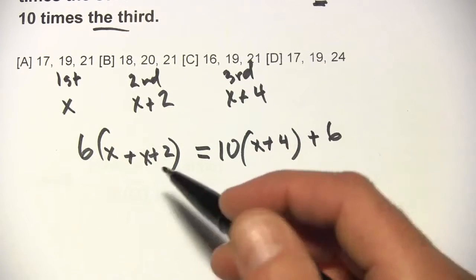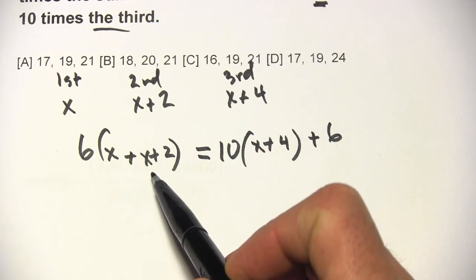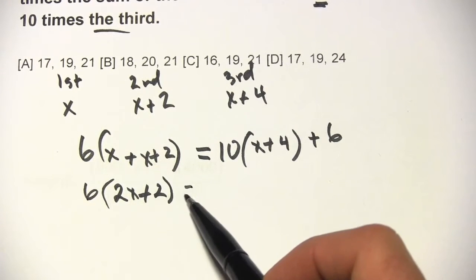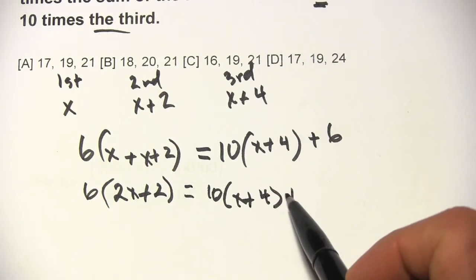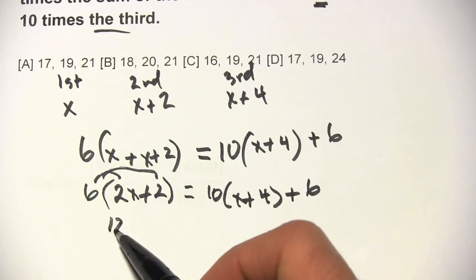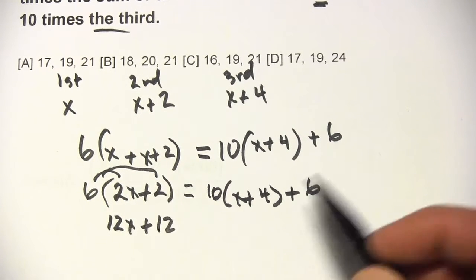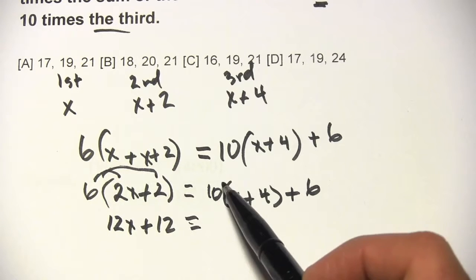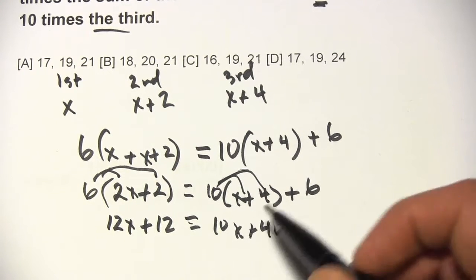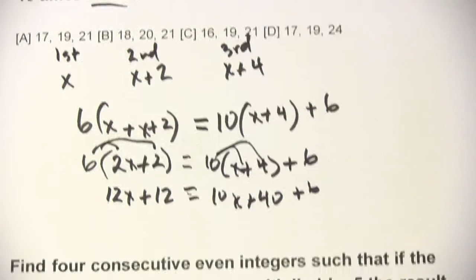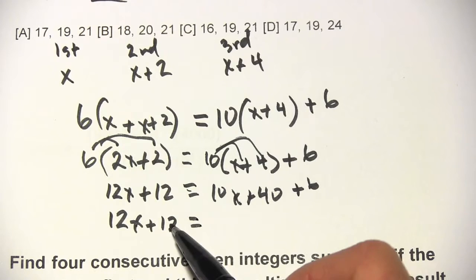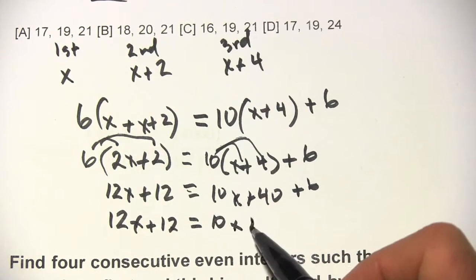Let's see if we can crunch out an answer. We can combine some like terms: x plus x is 2x, so inside we'd have 2x plus 2. Then we have 10 times x plus 4, plus 6. We distribute the 6: 6 times 2x is 12x, 6 times 2 is 12. Then we distribute the 10: 10 times x is 10x, 10 times 4 is 40, and then plus 6. This simplifies to 12x plus 12 equals 10x plus 46.